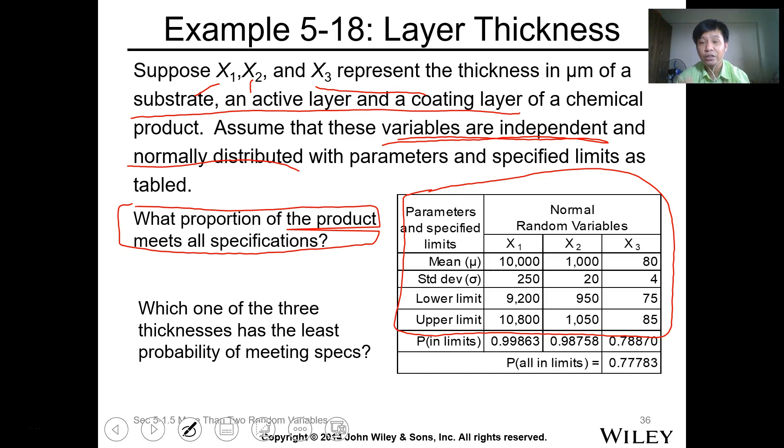Since the variables are independent, you just need to get the probability of each function. The probability of x from lower limit to upper limit, then transpose it to z, z of the lower limit and upper limit.